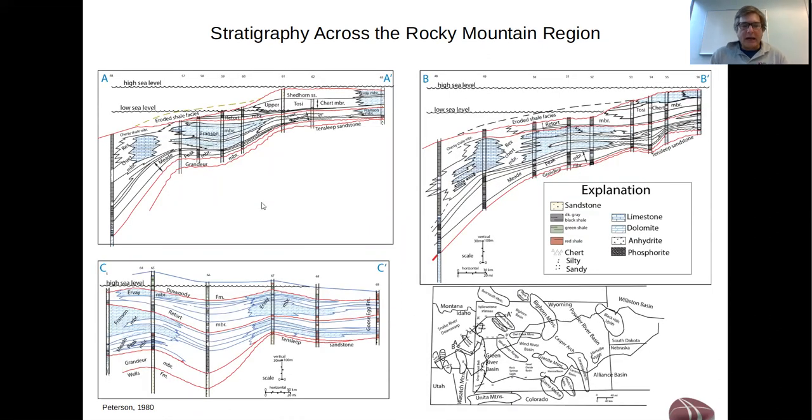One last slide to look at some of this stratigraphic complexity that characterizes the phosphoria in a little bit more detail. These are three cross-sections adapted from work by Jack Peterson. The first cross-section A to A' goes across northern Wyoming, B to B' stretches across the western part of Wyoming, and C to C' stretches across the southern part of the state. The main point is that the phosphoria contains at least three sequence boundaries, highlighted by these red squiggly lines.